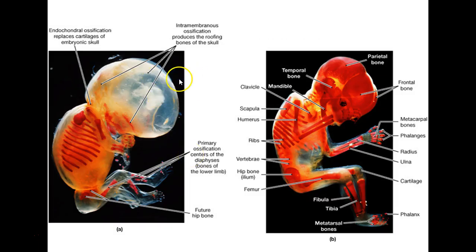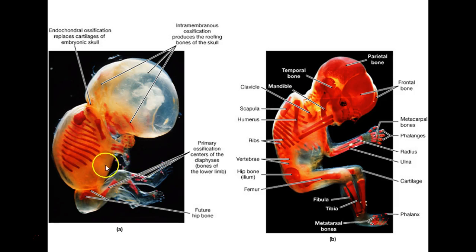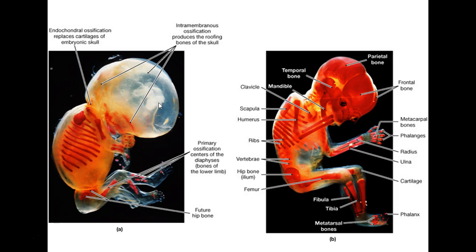This is showing you where intramembranous ossification occurs, like these flat bones of the skull. And then endochondral — don't get confused — the ribs and the sternum. Technically those are flat bones, but they do endochondral ossification. So just because a bone is flat doesn't necessarily mean it did intramembranous ossification.